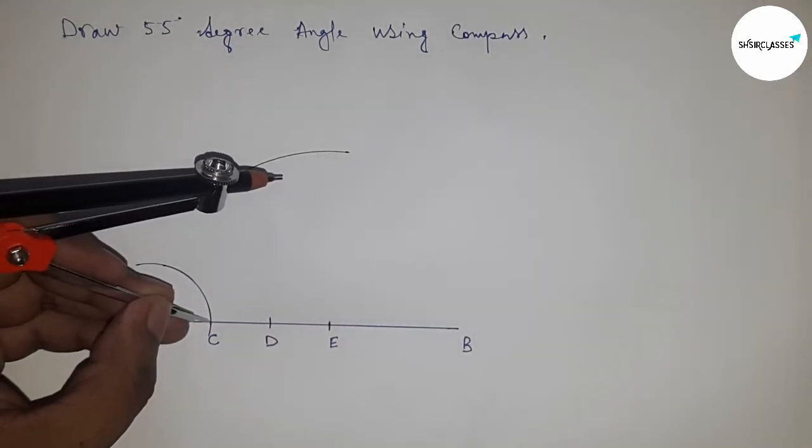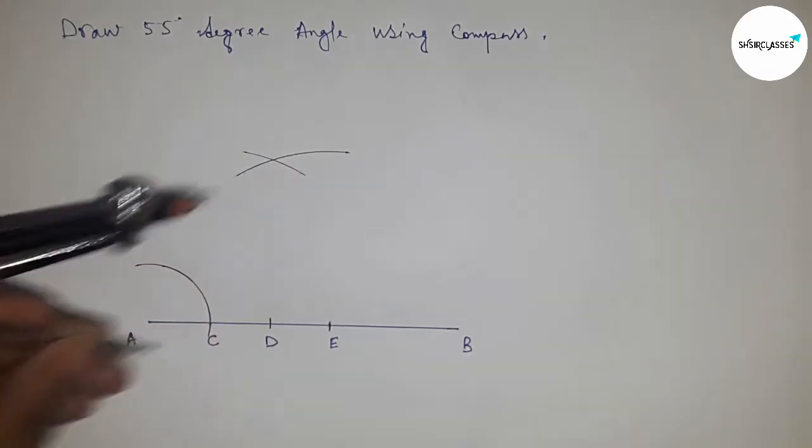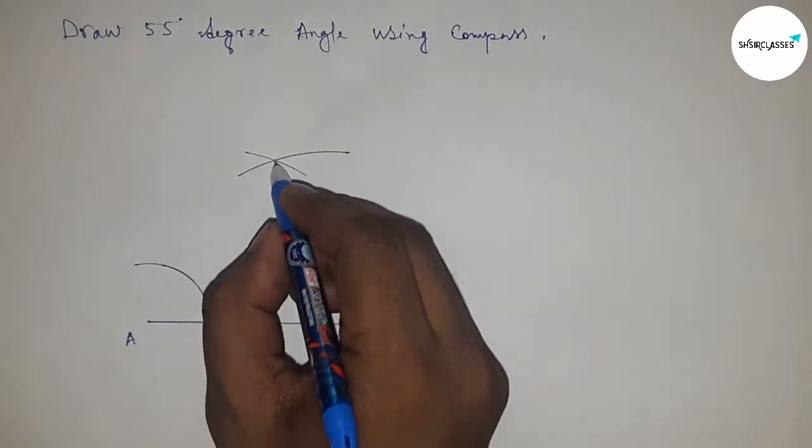Next, putting the compass on point C and cut the arc by this way. Next, joining this and point A.